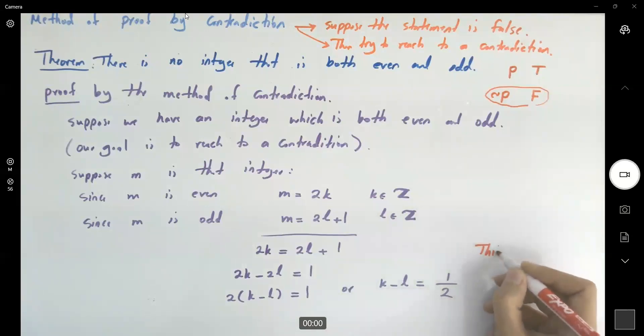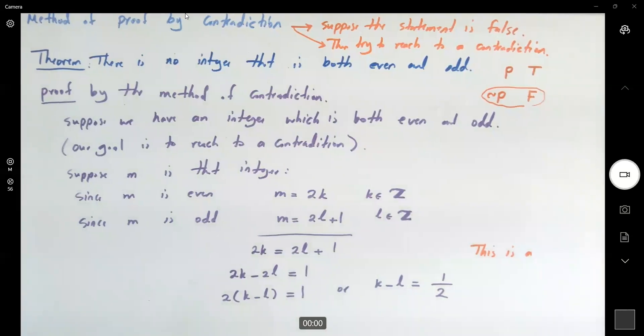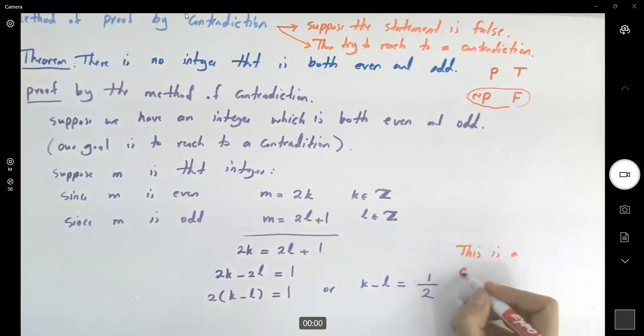This is a contradiction. It says integer is equal to a rational number. This is your contradiction.